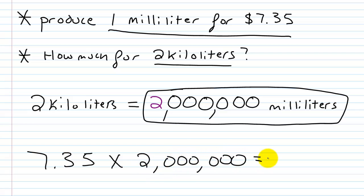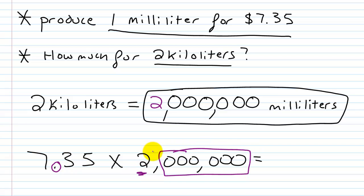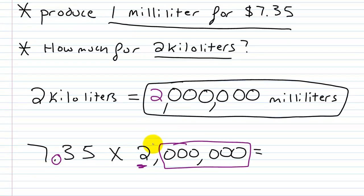We can do this without setting up a vertical multiplication. Let's start by ignoring the decimal — pretend we just have 735. We're going to multiply this by two using our method where we attach trailing zeros at the end. So 735 times two: 700 times two is 1,400.